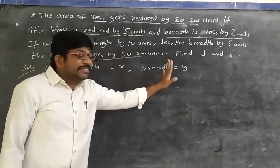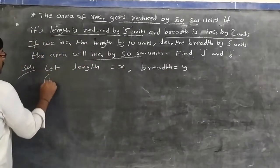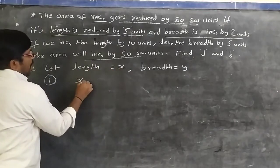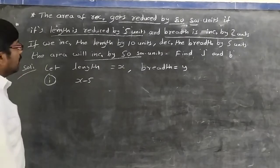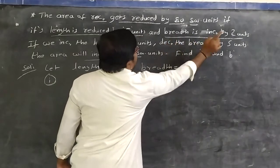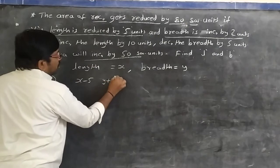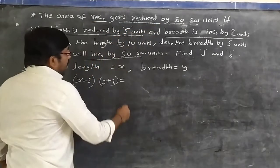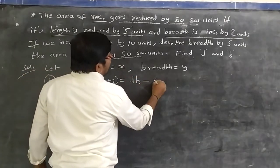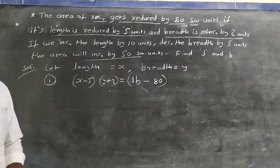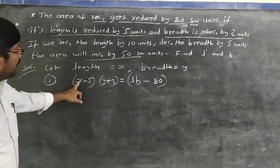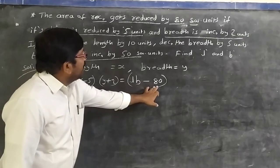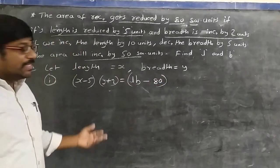Let length = x and breadth = y. For the first condition: length reduced by 5 means x − 5, and breadth increased by 2 means y + 2. The area of the new rectangle is (x − 5)(y + 2), and since area is reduced by 80, we have (x − 5)(y + 2) = xy − 80.